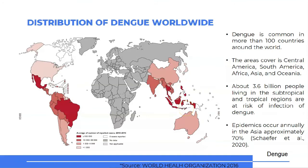Let's talk about the distribution of dengue worldwide. This map is obtained from the World Health Organization 2016, showing the average number of reported dengue cases from 2010 to 2016. Dengue is common in more than 100 countries worldwide. The areas covered most are Central America, South America, Africa, Asia, and Oceania. About 3.6 billion people living in subtropical and tropical regions are at risk of dengue infection. Pandemics occur annually in Asia at approximately 70%.